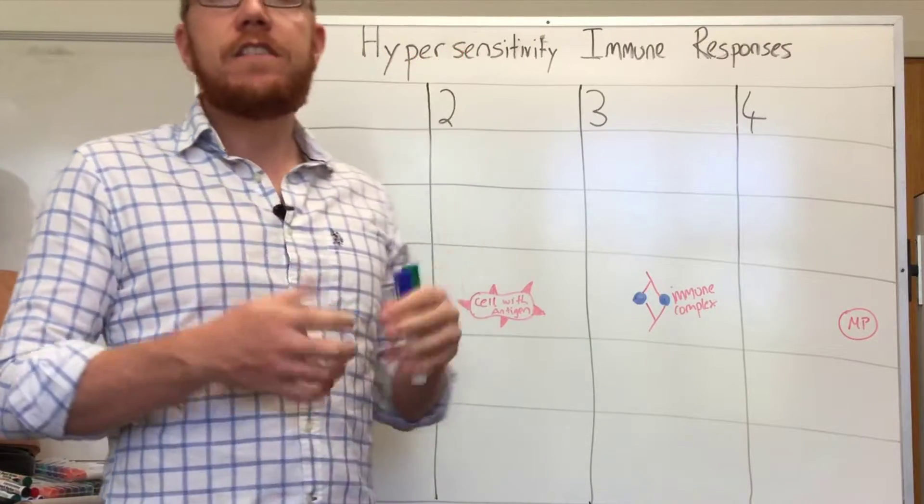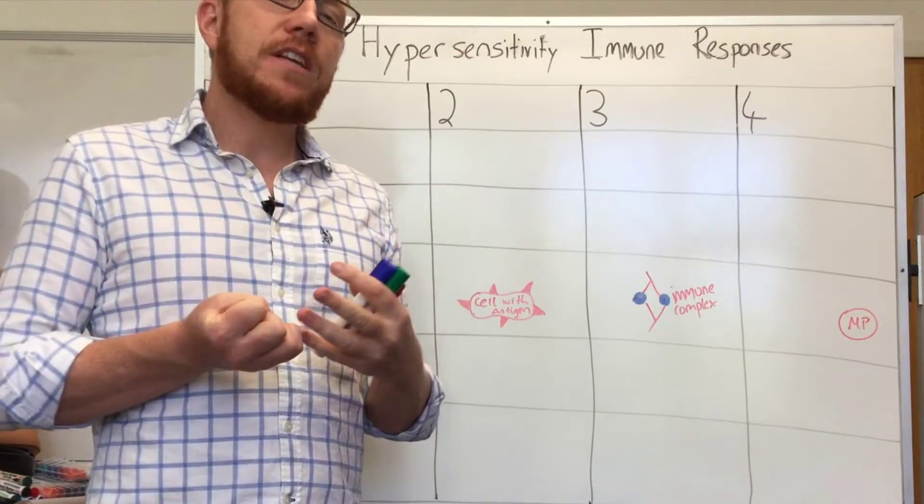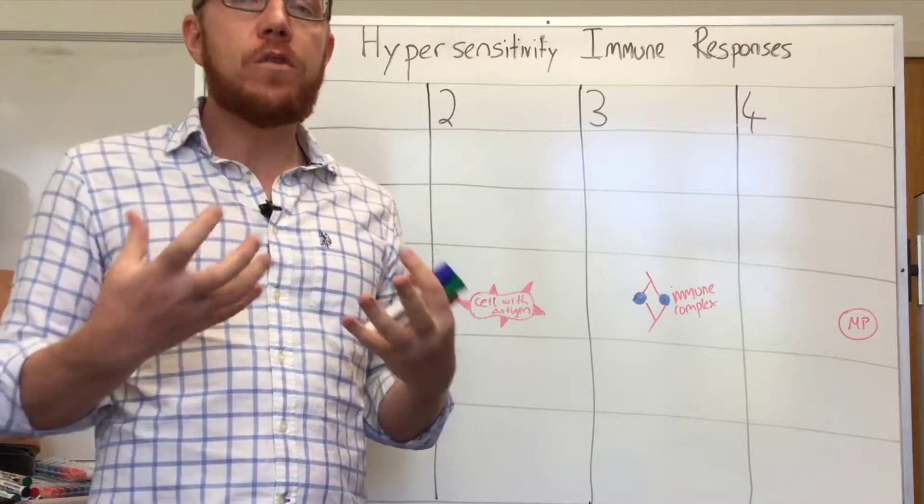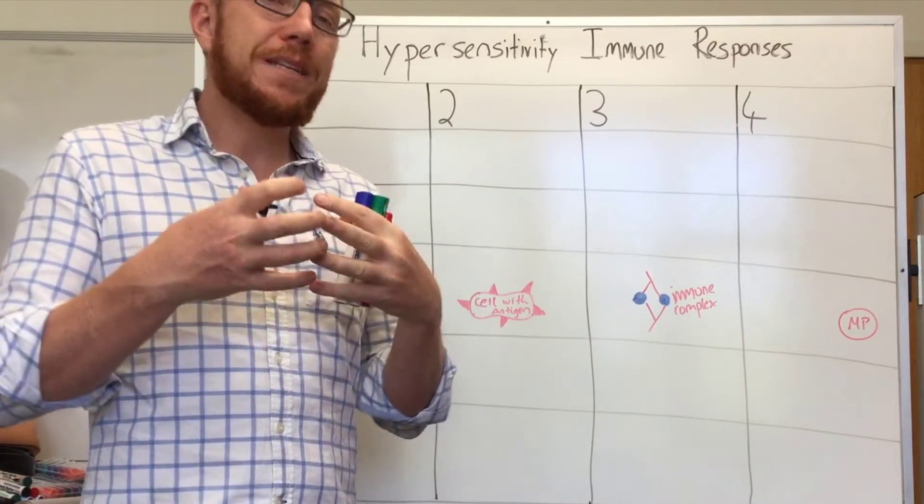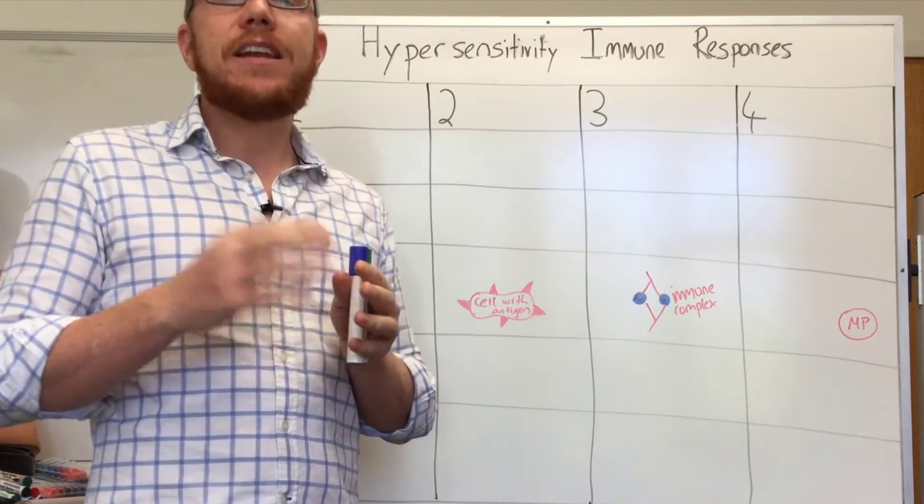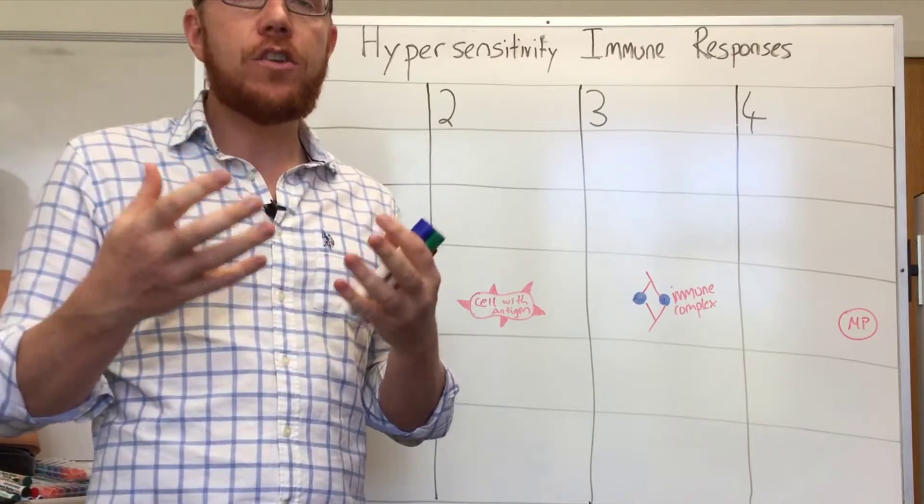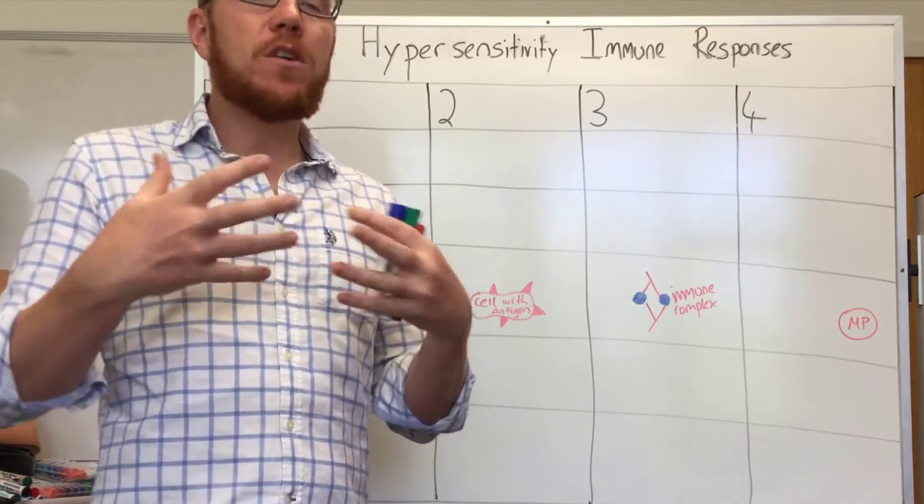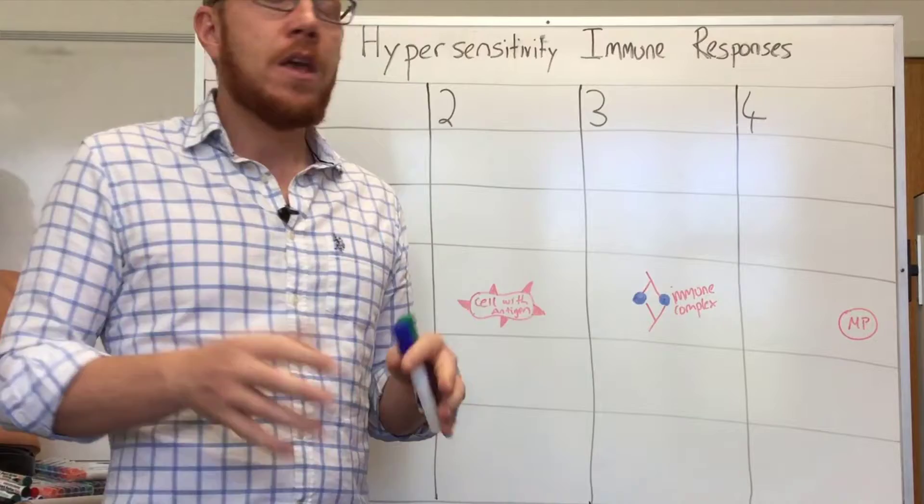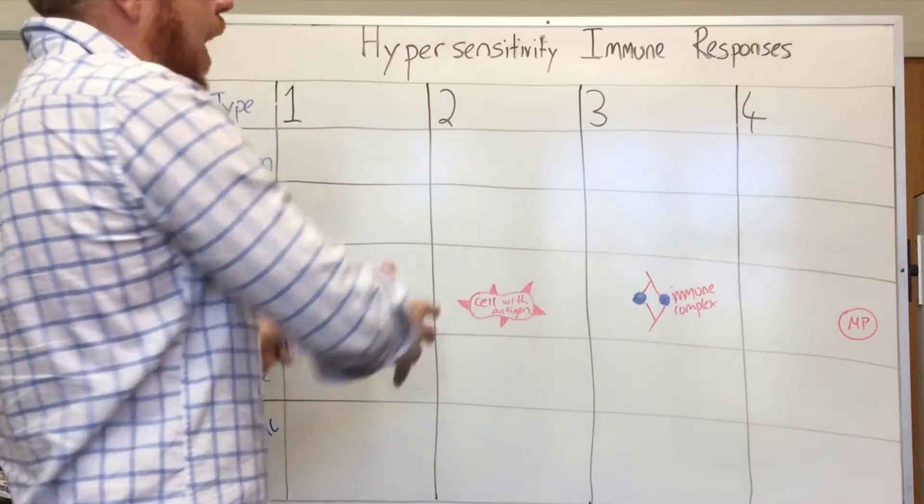Welcome to this lecture on hypersensitive immune responses. These are a set of conditions where essentially your immune system overreacts to a particular stimulus, and this can lead to significant inflammation, cellular damage, and possibly even death. As you can see on the board, we've got a table.